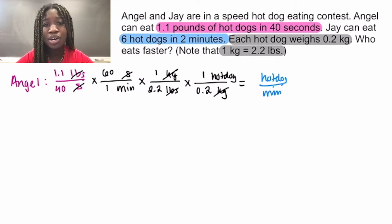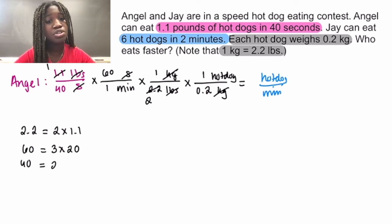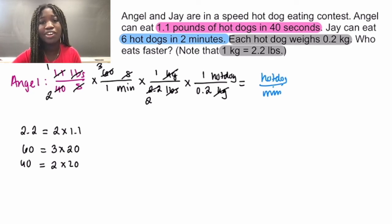Let's focus on 1.1 and 2.2. We know that 2.2 is 2 times 1.1, so the 1.1 can be taken out and we'll be left with 1 on top and 2 at the bottom. Now let's address 60 and 40. We know that 60 equals 3 times 20 and 40 equals 2 times 20. So that means the 20s can cancel and we'll be left with 3 on top and 2 at the bottom. On our numerator, we have 1 times 3 times 1 times 1 times 1, and this equals 3. In our denominator, we have 2 times 1 times 2 times 0.2, which leaves us with 0.8.